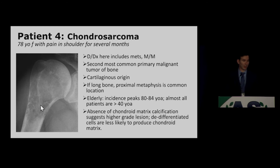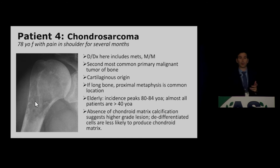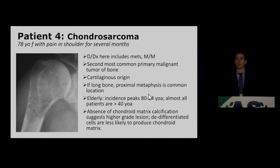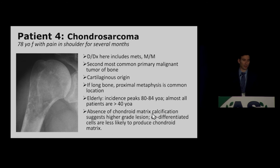Patient 4 is a chondrosarcoma — a very aggressive-looking lesion. It is lytic with no internal matrix, moth-eaten, with areas of cortical endosteal scalloping where the cortex is thinned from the inside, and frank cortical destruction. It is the second most common primary malignant tumor of bone, a tumor of the elderly peaking in the mid-80s — we really shouldn't be seeing these in young patients. The absence of chondroid matrix speaks to a de-differentiated, higher-grade chondrosarcoma, as in this case.